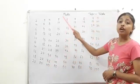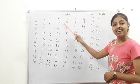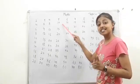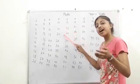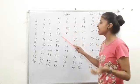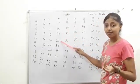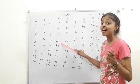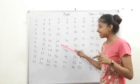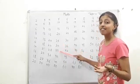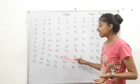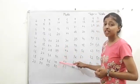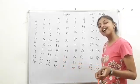Next is 5 ones are 5, 5 twos are 10, 5 threes are 15, 5 fours are 20, 5 fives are 25, 5 sixes are 30, 5 sevens are 35, 5 eights are 40, 5 nines are 45, 5 tens are 50.